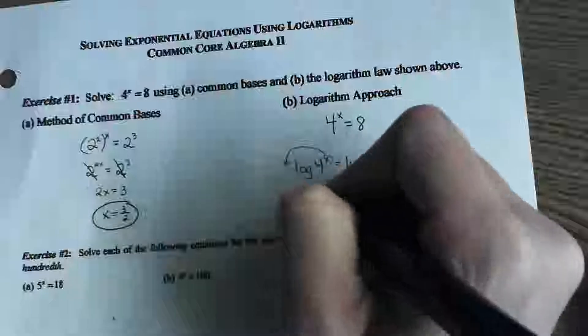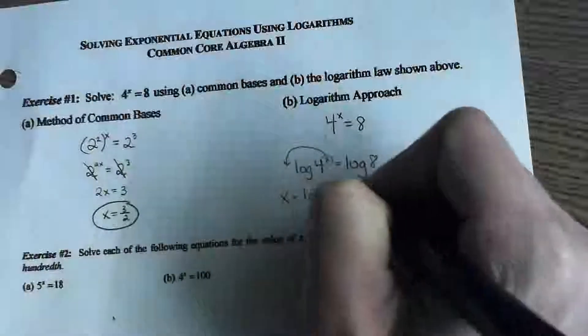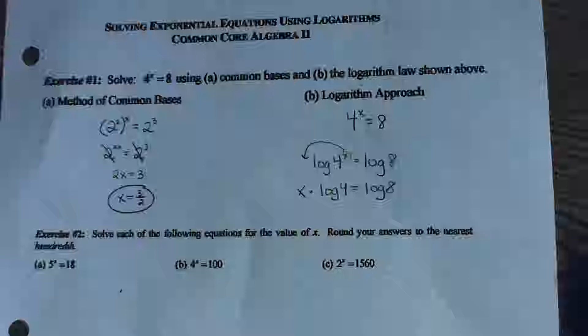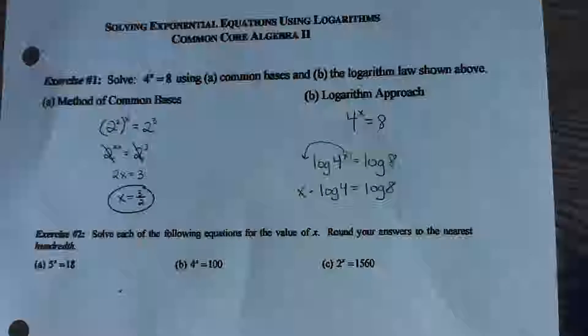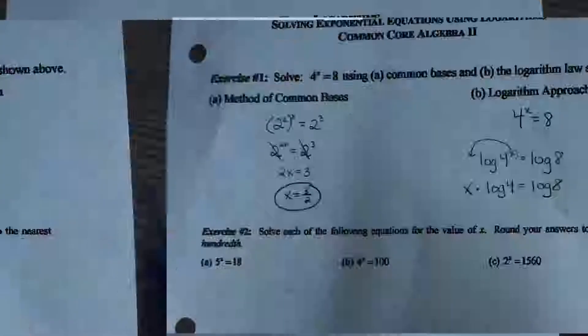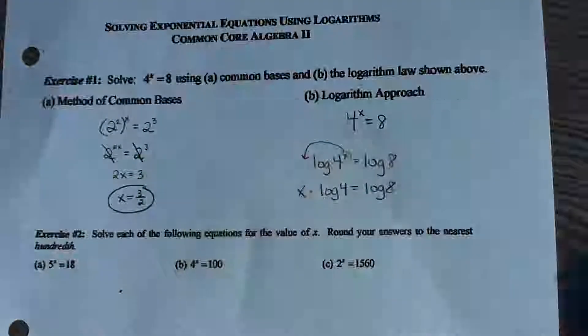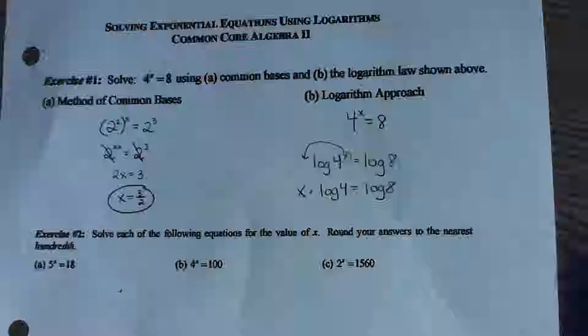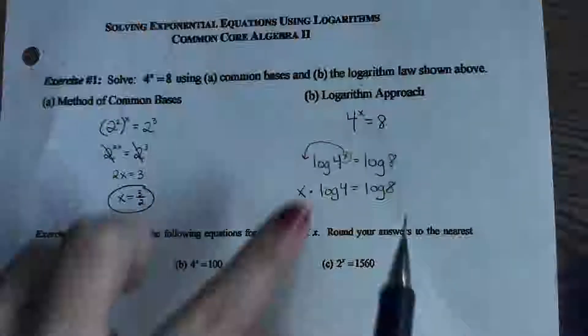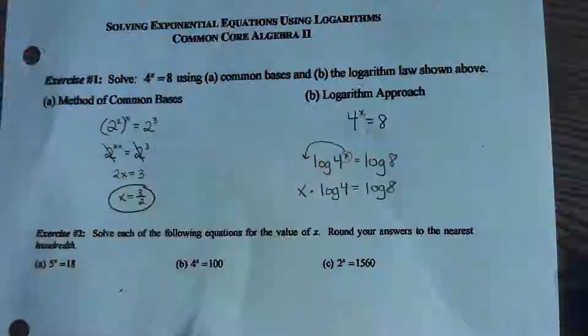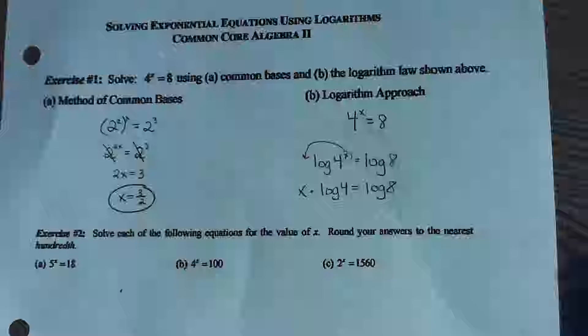This exponent can be rewritten out in front. And essentially, when you're trying to solve for a variable that's locked up in an exponent, the only way to get an exponent out of there, a variable out of the exponent, is to take the log and use this property. Because this property gets that exponent so that it's no longer an exponent. And now I can just get x all by itself.